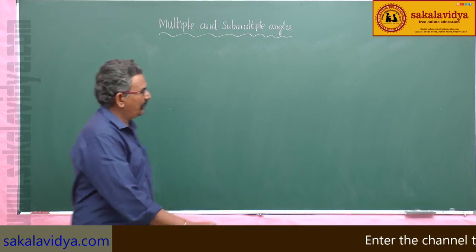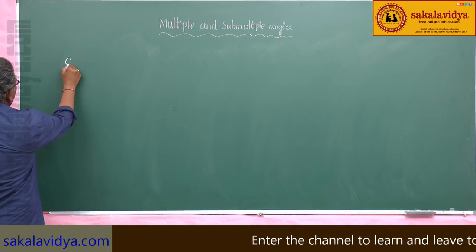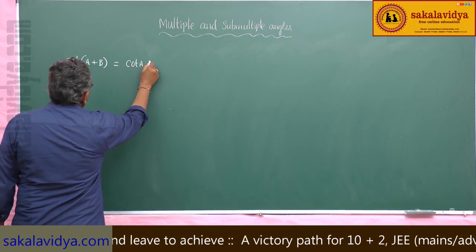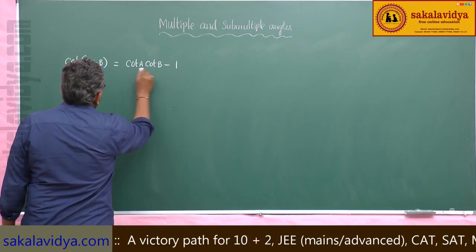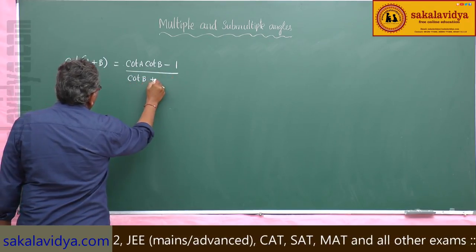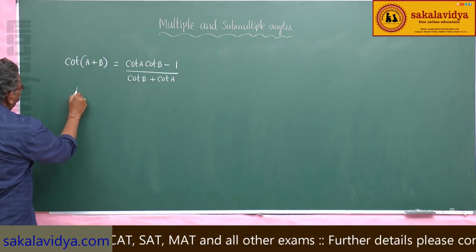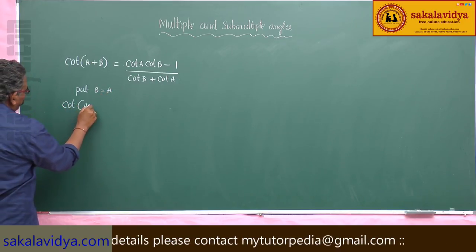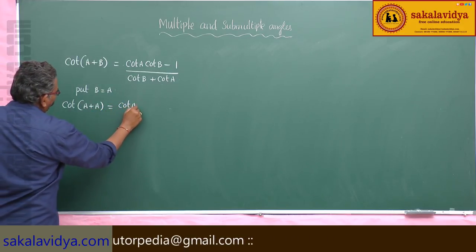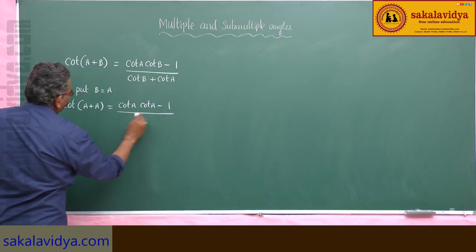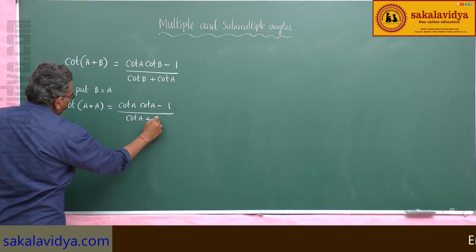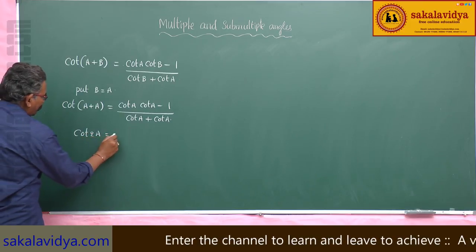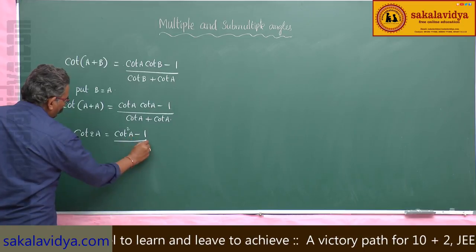Let us find out the value of cot 2A. We know that cot of (A+B) is equal to (cot A · cot B − 1) / (cot B + cot A). Now, put B equal to A. So, cot of (A+A) is equal to (cot A · cot A − 1) / (cot A + cot A). This gives us cot 2A = (cot²A − 1) / (2 cot A).